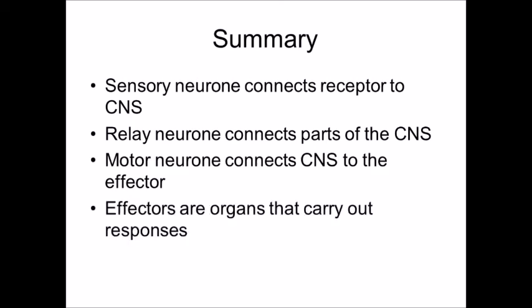You then have motor neurons and those connect up the central nervous system to an effector, and an effector is something which carries out—an organ which carries out a response, something like a muscle or a gland. The synapses are the gaps between the neurons and we will come on and look at those in the next video.